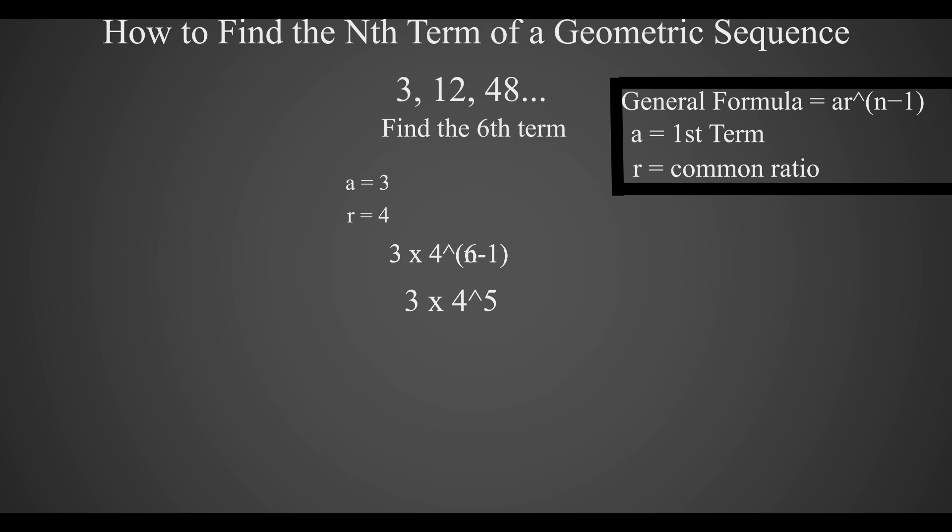Now 4 to the power of 5 is equal to 1024, which means that when we multiply it by 3, we get 3072, which should be our sixth term of this sequence.